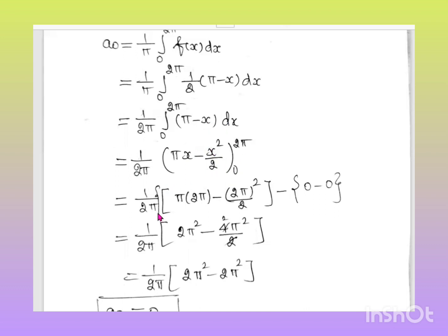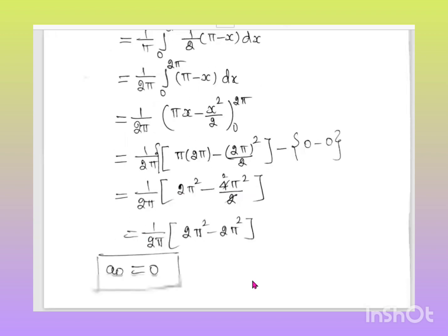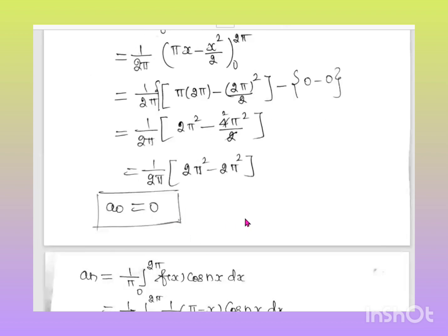Applying the limits: (1/2π)[π(2π) - (2π)²/2 - 0] = (1/2π)[2π² - 2π²] = 0. So a₀ = 0.